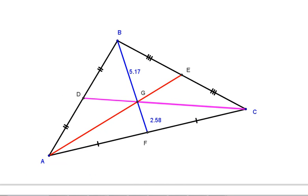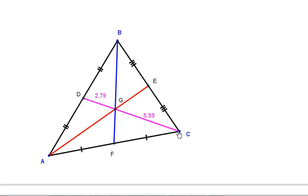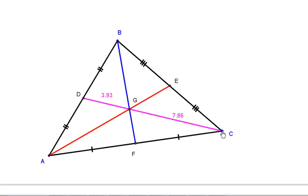And just for fun, let's also look at the purple or pink median. We see that this median is also in a 2 to 1 ratio. The length from the vertex to the centroid is double the length of the centroid to the side.